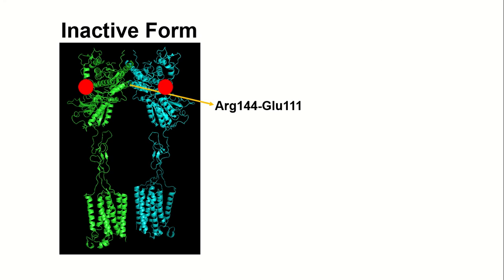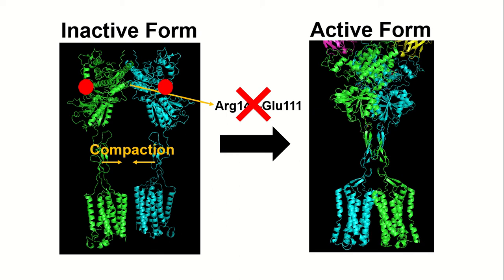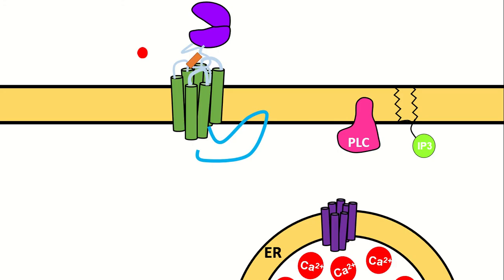Binding of glutamate to the VFT disrupts the stabilizing force between arginine-144 and glutamate-111 at the VFT-dimer interface. This releases MGluR5 from its inactive state in order to close the VFT lobes. It also triggers a global compaction of the receptor that brings the dimer subunits closer and causes the intracellular domain to adopt a high-affinity conformation for G-protein binding.